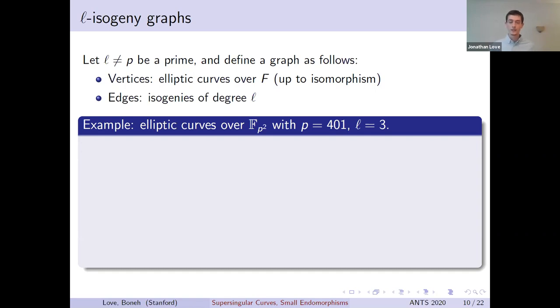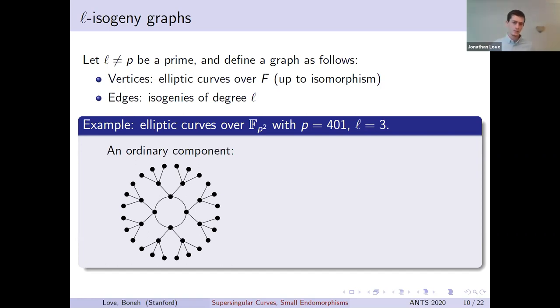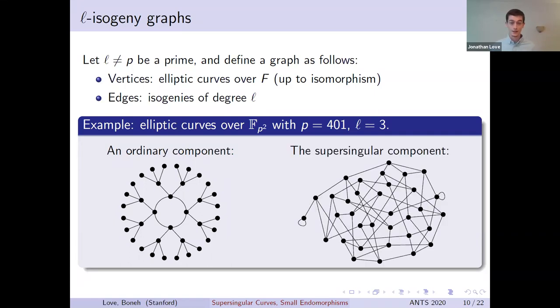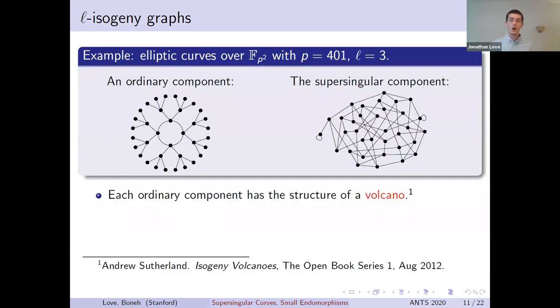The graph breaks up into a bunch of components called isogeny classes. If we take the component containing an ordinary curve, in this case I took the elliptic curve with j-invariant 44, we find a graph that looks like this. But if we start with a supersingular curve, in this case I took the elliptic curve with j-invariant zero, we get a graph that instead looks like this. It's just a little bit less organized, to say the least. Now, this observation from this example holds more generally. Components of ordinary curves always take the structure of volcanoes, where you have a cycle in the middle and trees coming outward from the vertices on the cycle. There's a great survey by Andrew Sutherland from the 10th ANTS conference that discusses these volcano graphs.